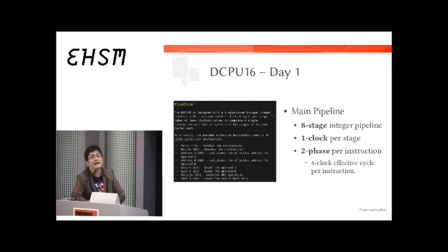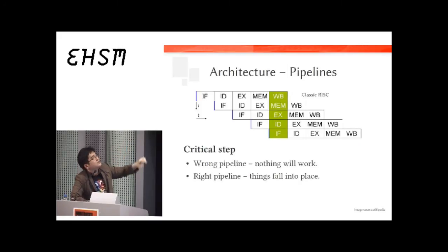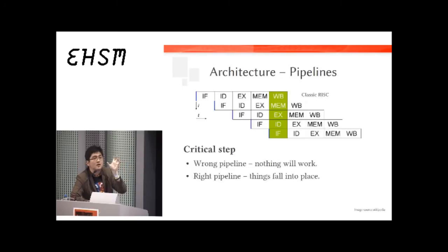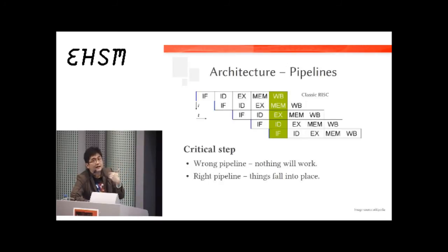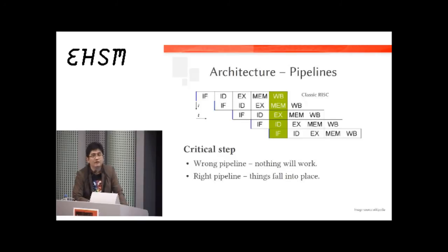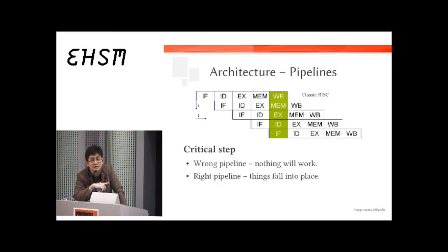Take the example of adding one and two. In the first stage the processor fetches the instruction. In the second stage it decodes it — figures out it's supposed to add one and two. In the third stage, execution, it performs the addition. But results are only written in the last stage — write back — so the output three is only produced at write back. That's a pipeline. If you get this right, everything else will just fall into place.